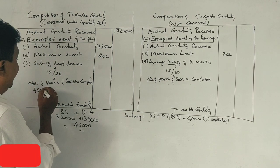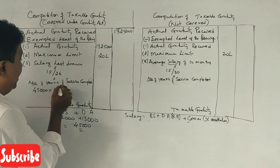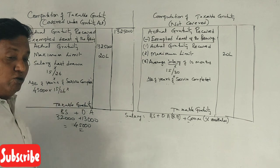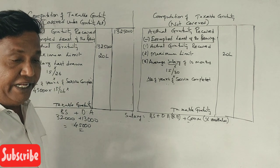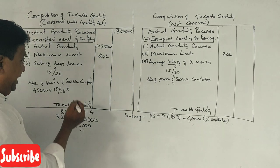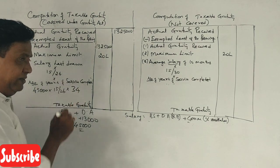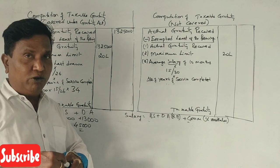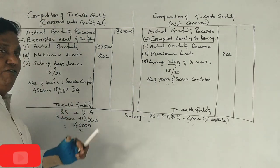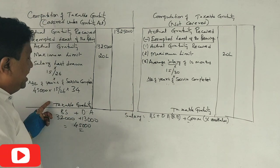So 45,000 into 15 by 26 into service years. Service is 33 years, 9 months. So, if you have more than 6 months, round it up. Now, 34 years. So this is the formula.